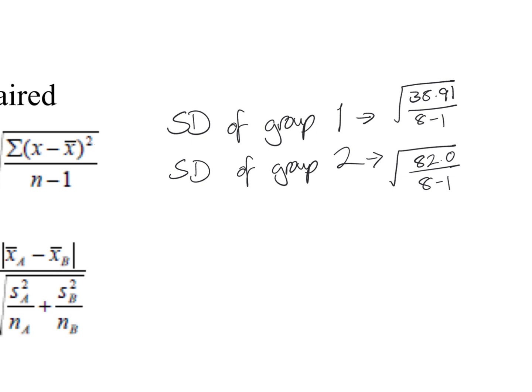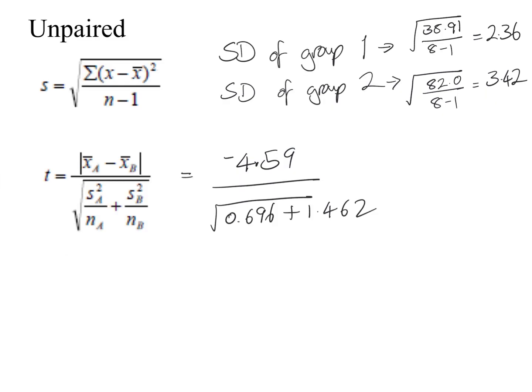The standard deviation for group 1 should be 2.36 and for group 2 should be 3.42. Putting these into the unpaired t-test formula gives a final answer of minus 3.12. Don't worry about the minus sign — it depends on which group you assigned as A or B. It's the absolute value of 3.12 that you compare with the critical value.